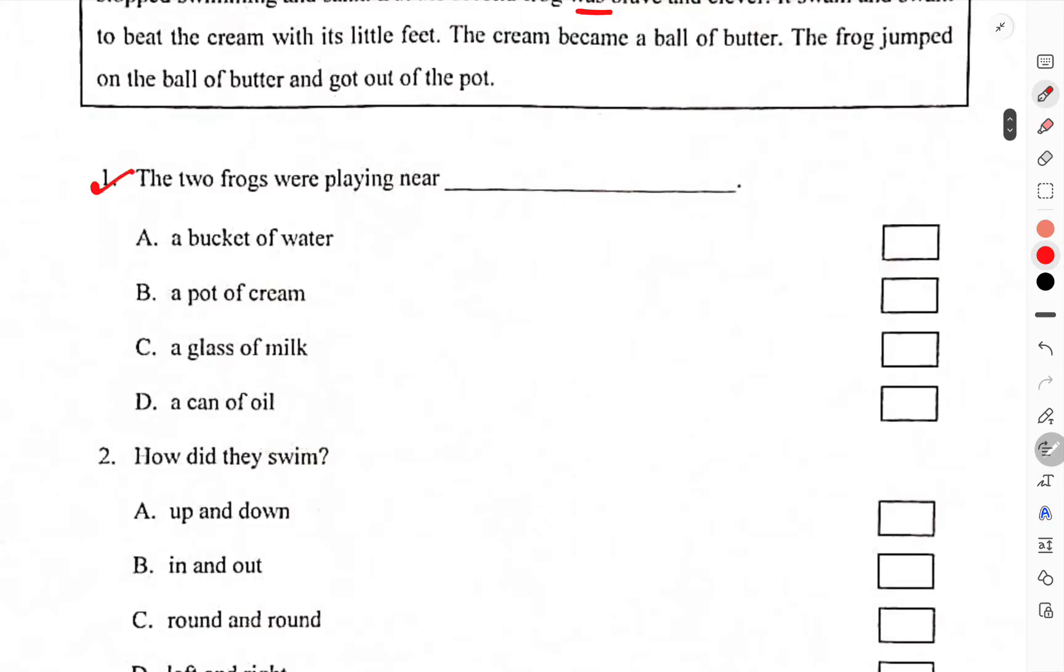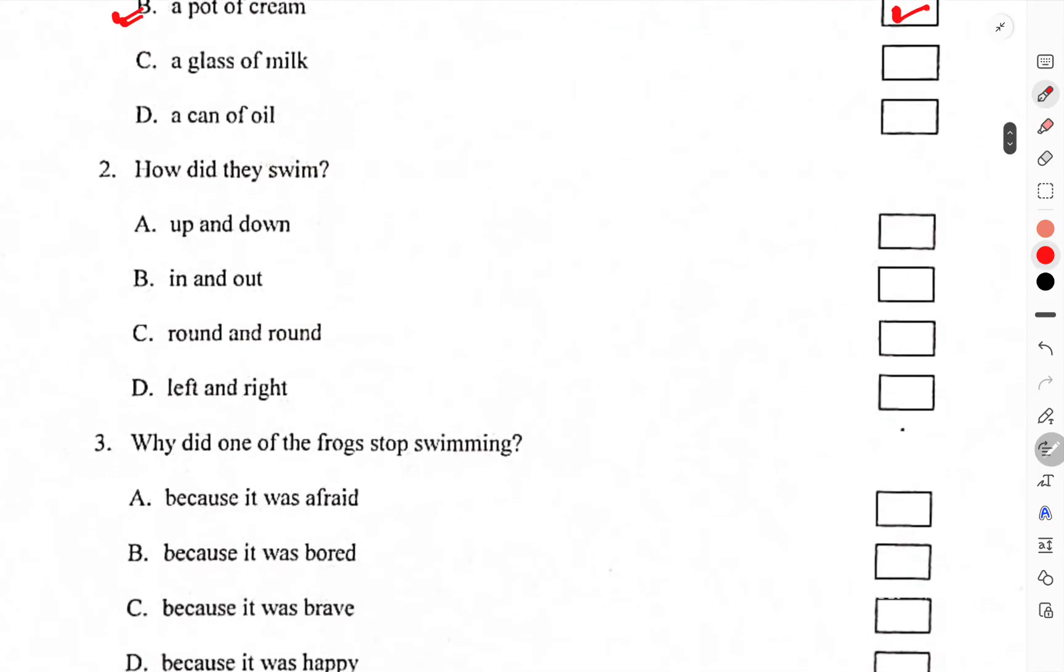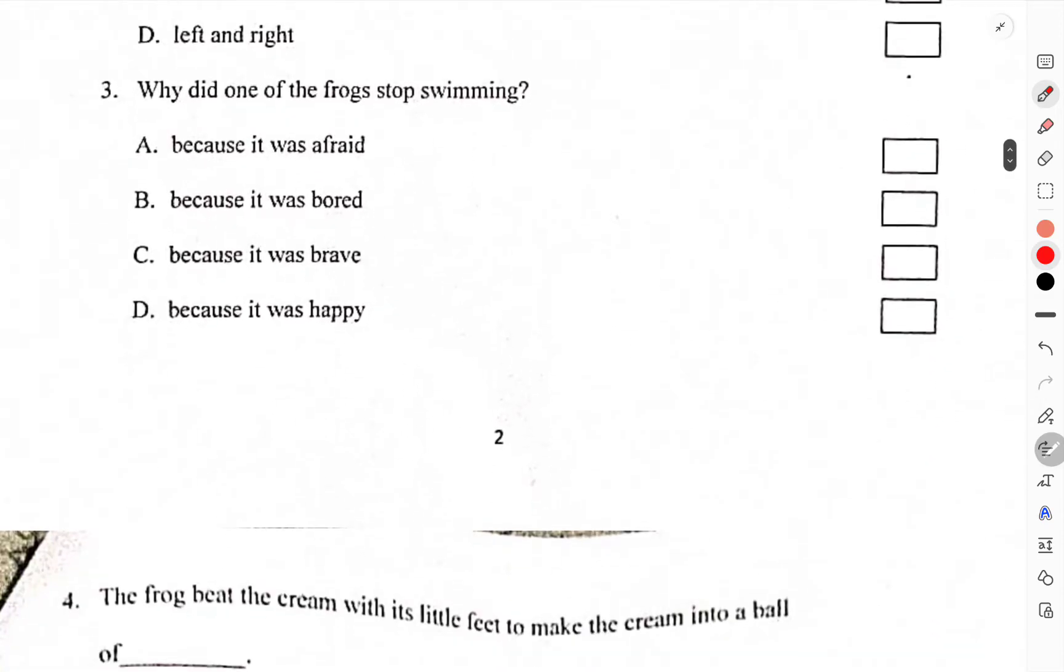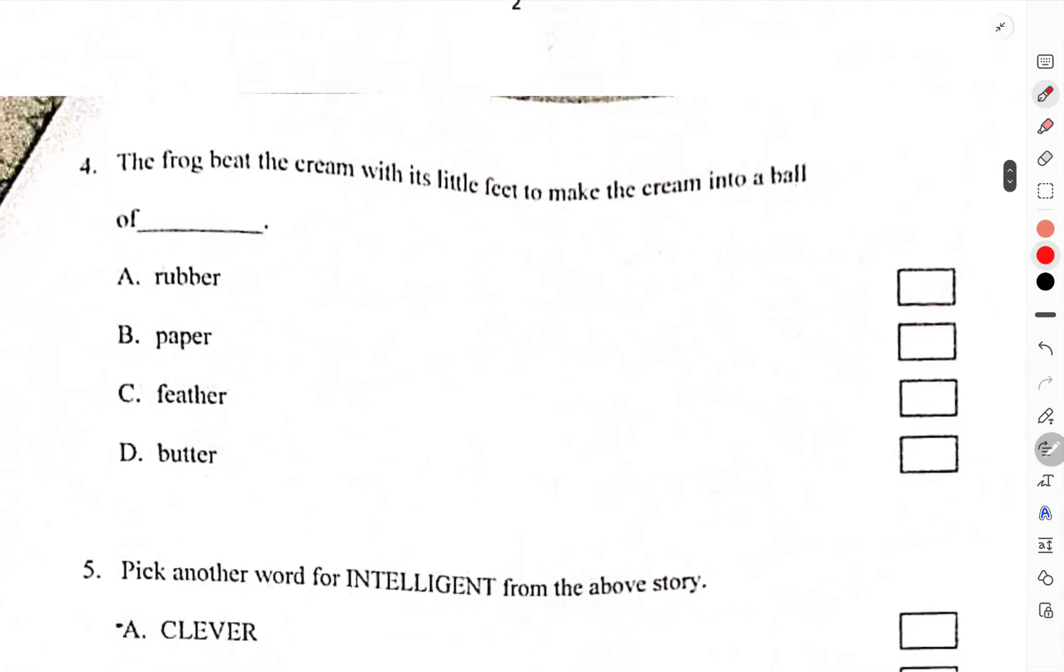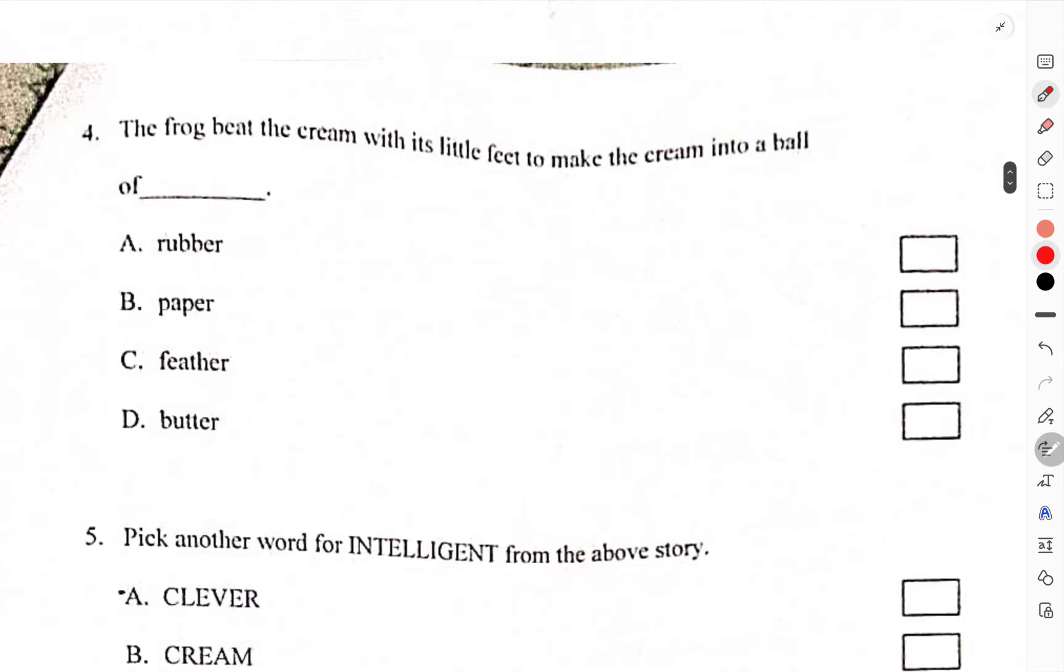The two frogs were playing near a pot of cream. B is the correct one. How did they swim? Round and round. C is the correct one. Why did one frog stop swimming? Because it was afraid. The first one is correct. The frog beat the cream with its little feet to make the cream into a ball of butter. The fourth one is correct.